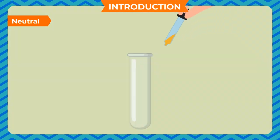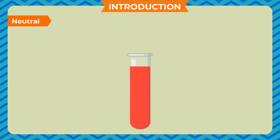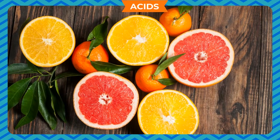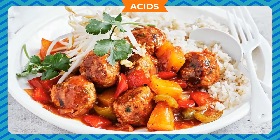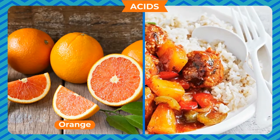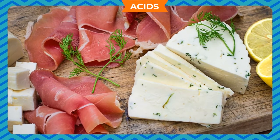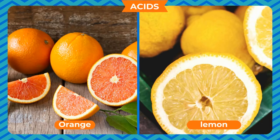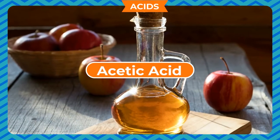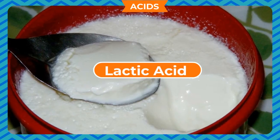Take a few drops of lime juice in a test tube and add some water. Put a few drops of blue litmus in the solution and shake the test tube well. You will notice that blue litmus will change to red, indicating that lime juice has acidic properties. Acids — anything that is sour is said to contain acids. Orange, lemon, vinegar, and curd are food items that contain acids. Orange and lemon contain citric acid, vinegar contains acetic acid, and curd contains lactic acid.